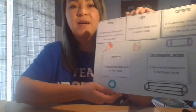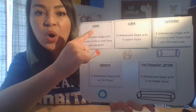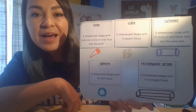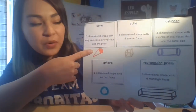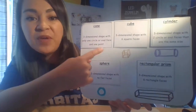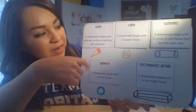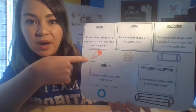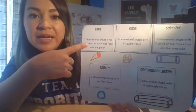Today we will be looking at 3D shapes. So let me show you our first 3D shape that we will be talking about. The first shape is the cone. The cone is a 3D shape with only one circle and it has an oval face. That means that it is round and oval, and it has one point at the bottom. This shape is called a cone.